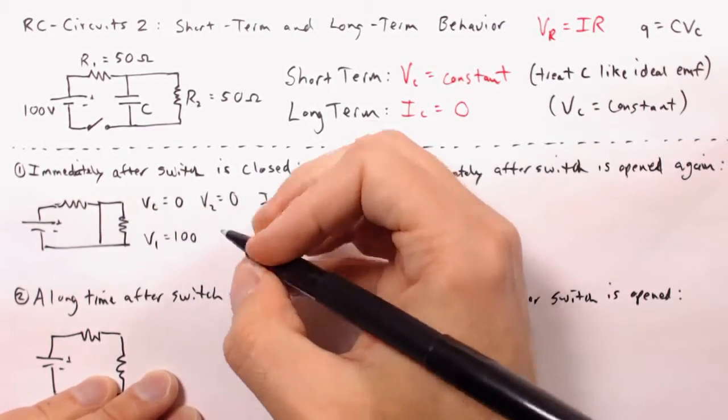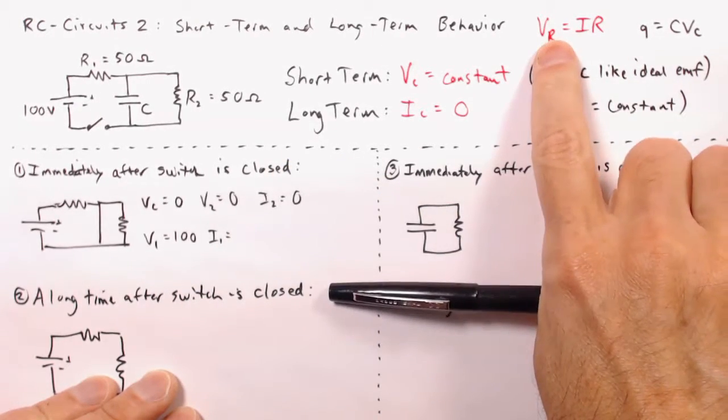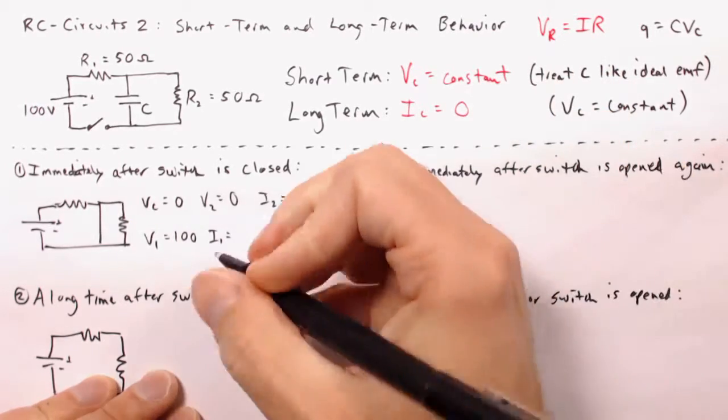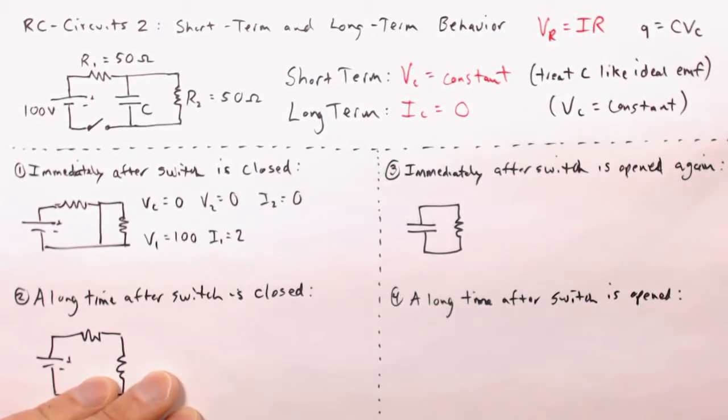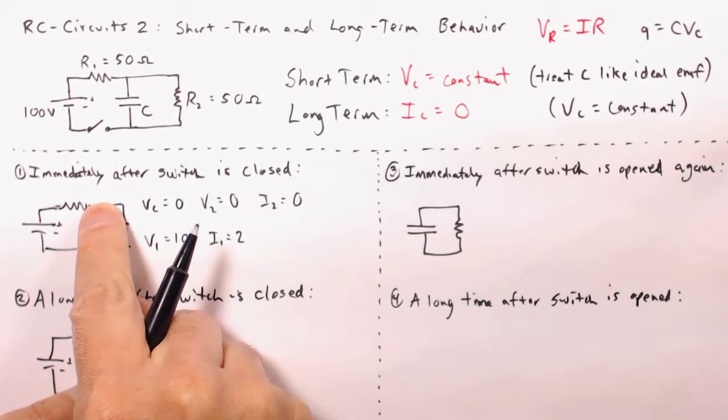So V1 equals 100. We can calculate the current through resistor number one using the formula, 100 volts, 50 ohms, and therefore I equals two, two amperes. So this current comes around, we have two amperes here, it's going to split.